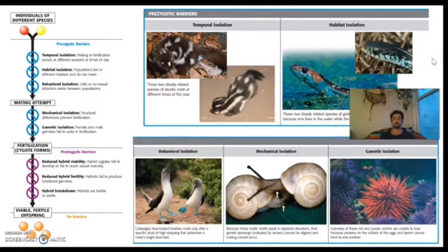But there's also postzygotic barriers. So in the case where two organisms that are different species reproduce and they do create offspring, we call that a hybrid. Oftentimes those hybrids are sterile or if they were to reproduce, every generation after that would be less and less healthy. And eventually you would have hybrid breakdown where those individuals would no longer be able to reproduce. That's kind of like the opposite of fitness. We call that hybrid breakdown with a reduction of hybrid fertility.